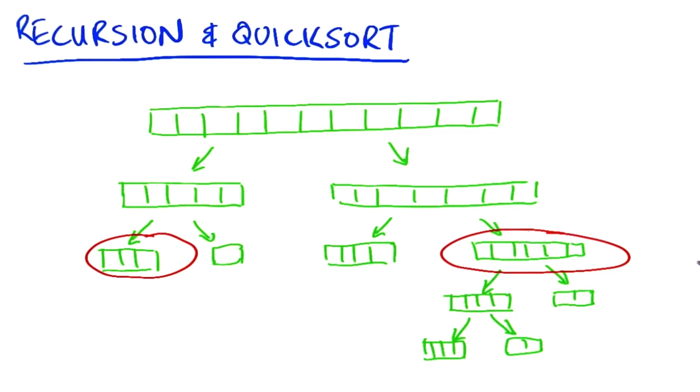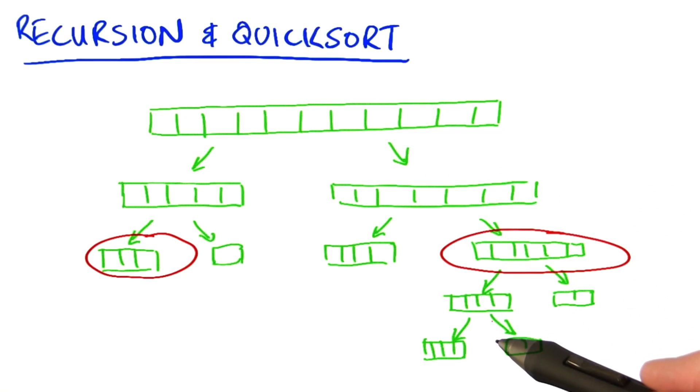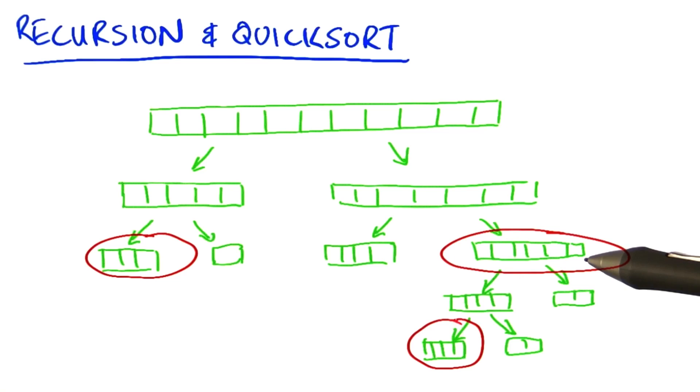Two important things to notice are first that the subpartitions aren't usually the same size. And second, that some branches go deeper than others. This means that the number of elements to be sorted is different each time, and so the decision on whether I need to sub sort can only be made after I've done the partitioning.